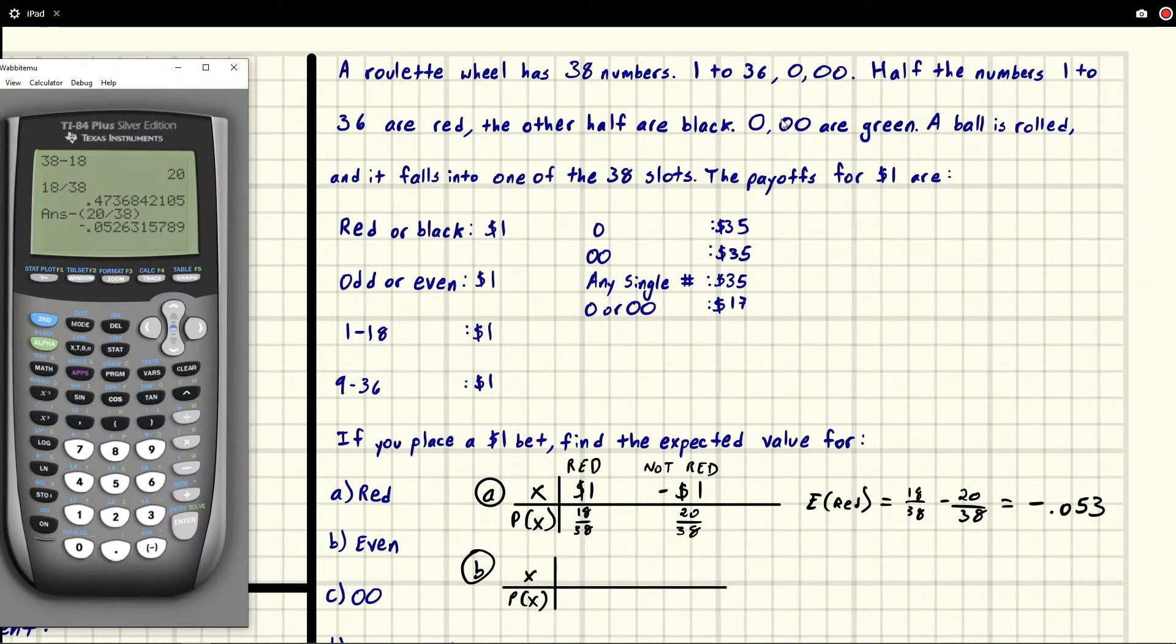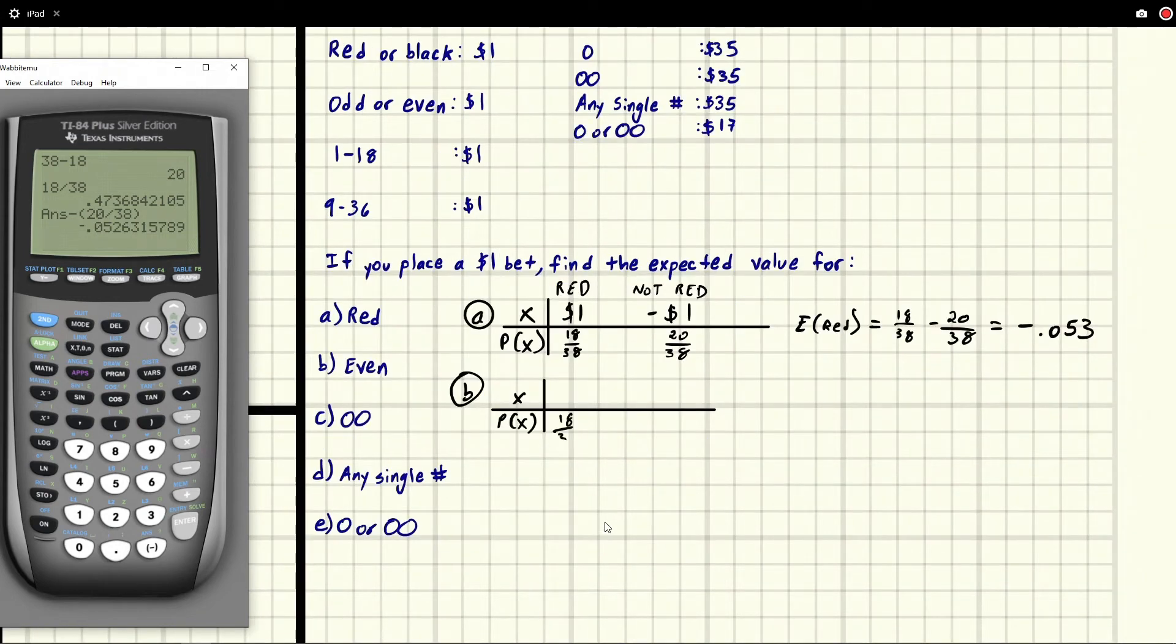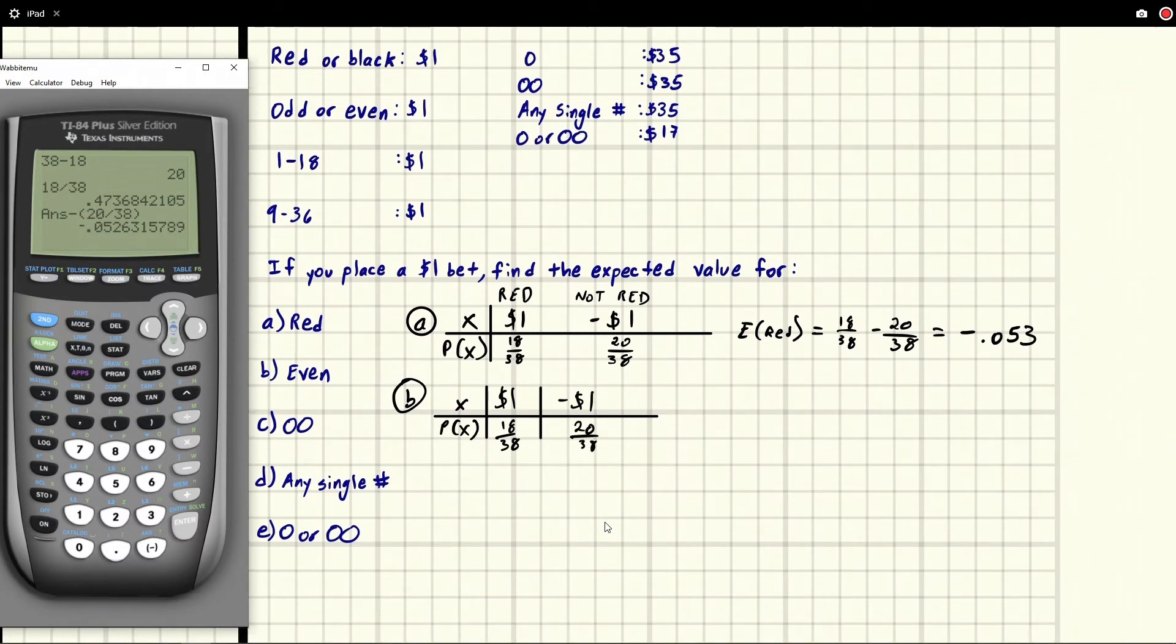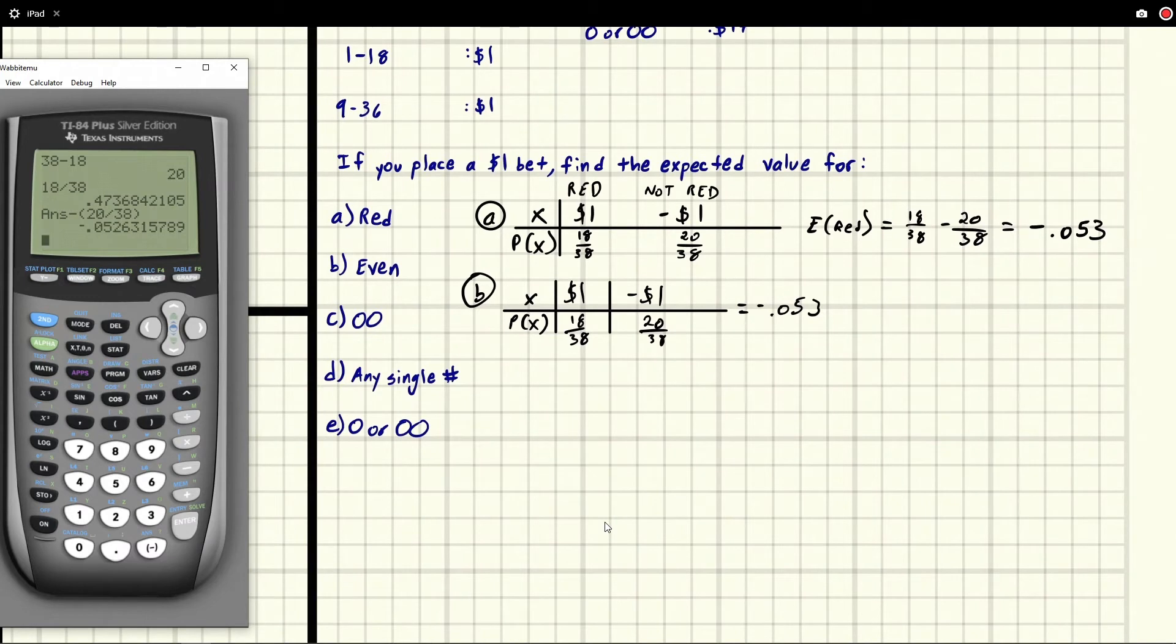So we do not include these. I kind of wish that in the problem statement it sort of specified this, but yeah, zero and double zero are not odd or even. For the even numbers, that means again we have half of the 38 numbers from 1 to 36 will be odd or even. And if half of them are odd or even, well it's the same thing as the red, because half of those were red. So that's 18/38 for it being even. So if it's even we get a payoff of a dollar. And if it's not even, then we lose our dollar. And there are 20 spots remaining out of the 38. So you see, it's the exact same thing as the previous one. So it's -0.053 because it's the exact same table.